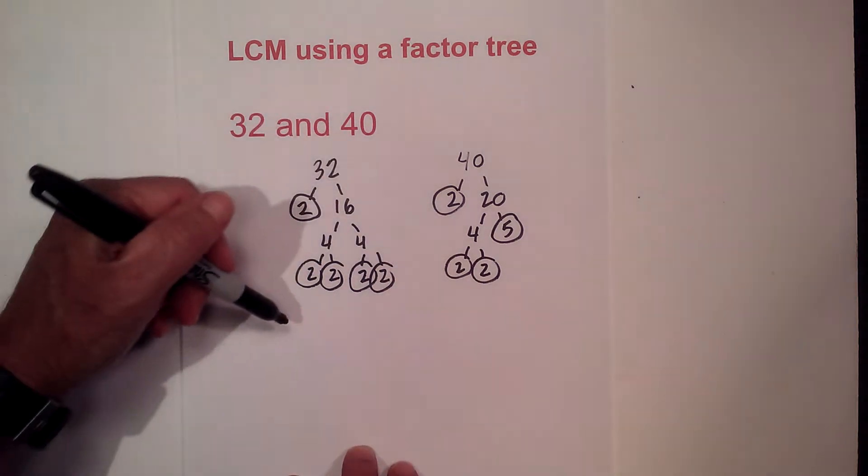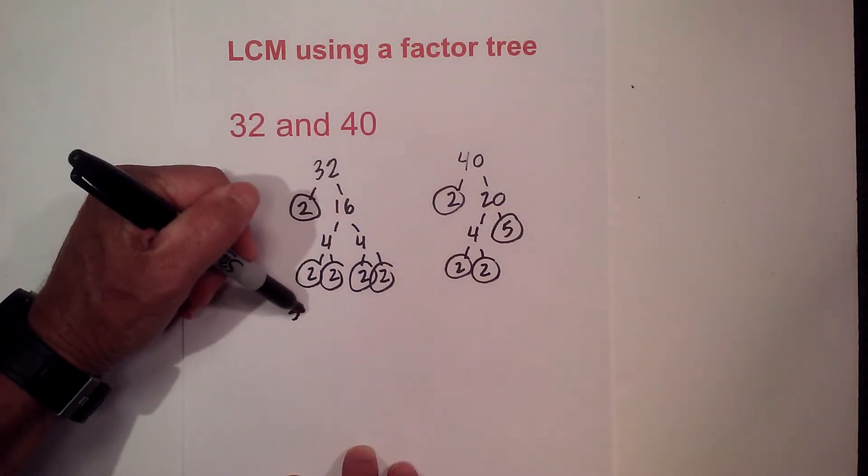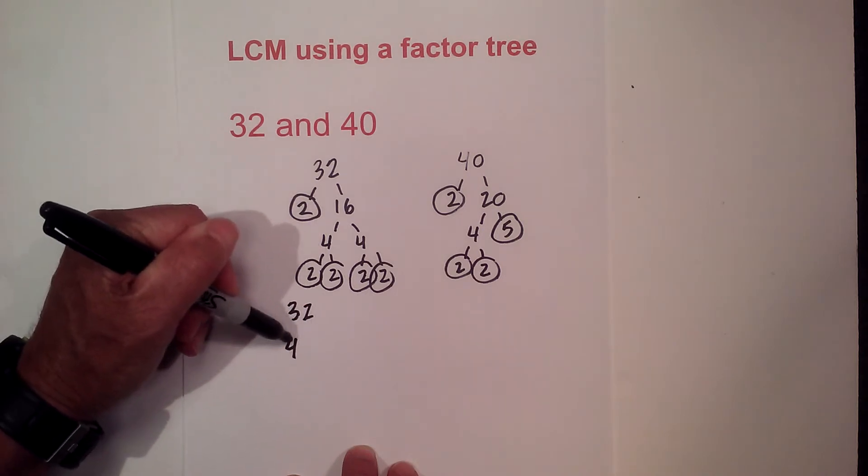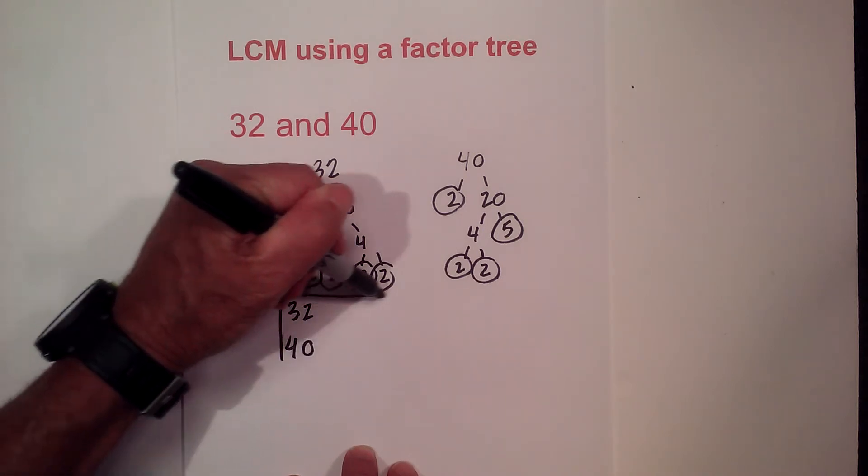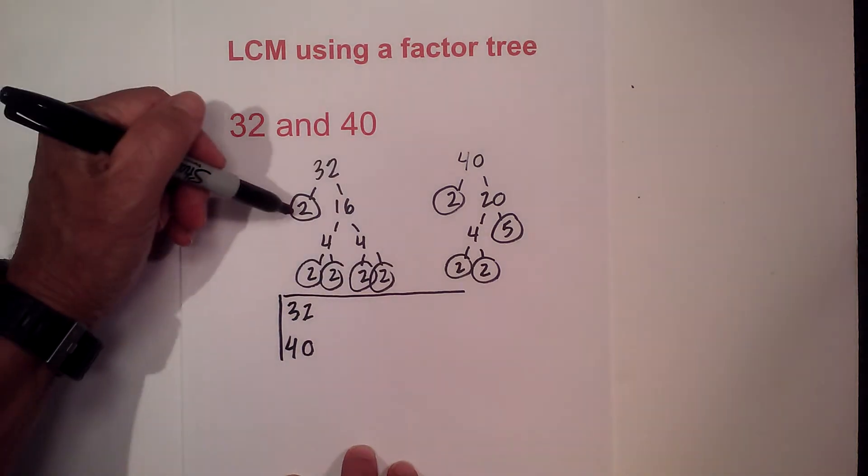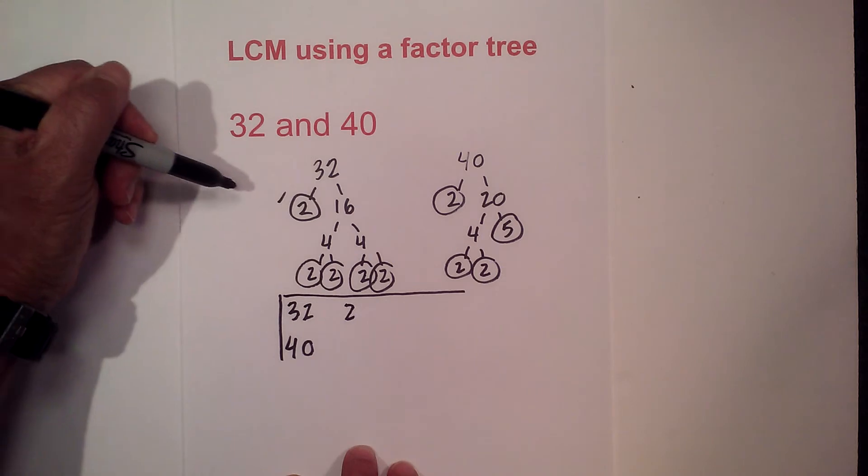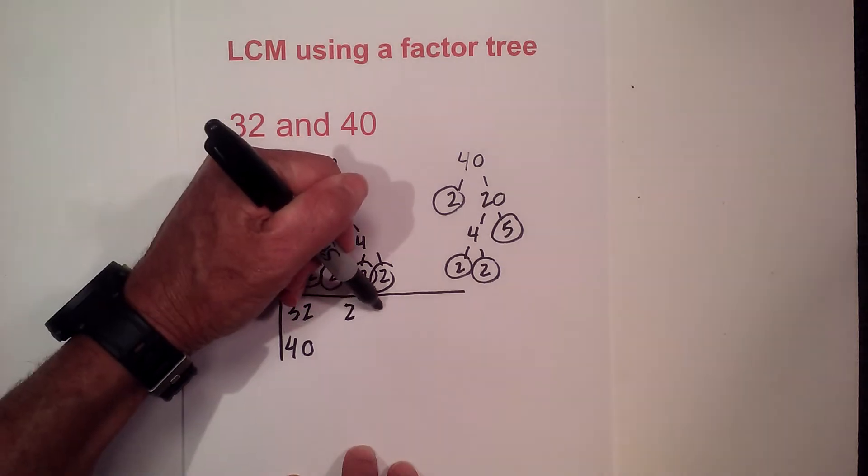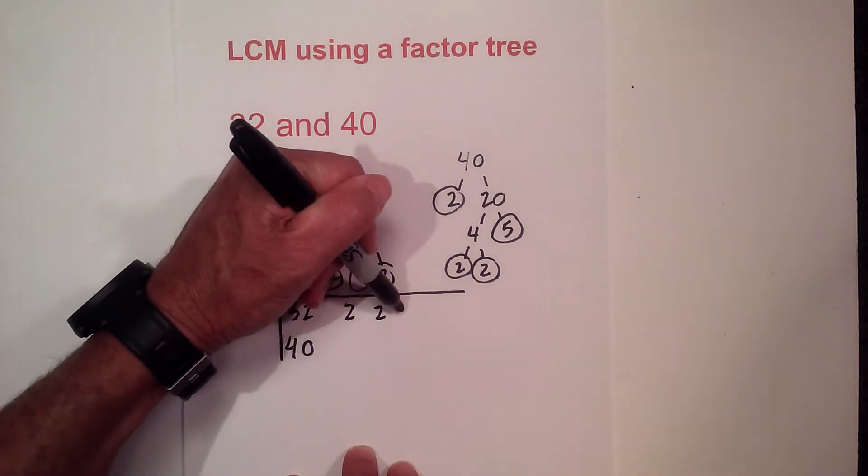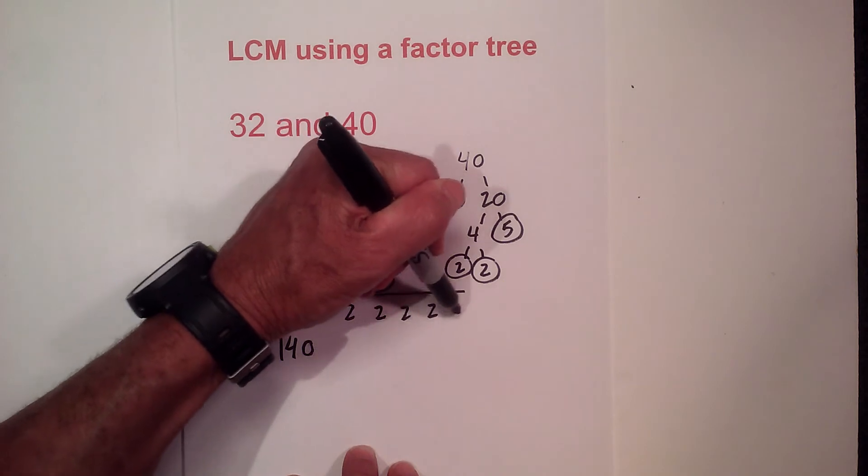Now to avoid mistakes let's create a chart. So I have 32 and 40 and what I will do is write all the prime numbers in it. I'm going to write the prime numbers for 32 and that is 2 and I'm going to put a check by each one to help avoid mistakes and there is another 2, 2 and 2.